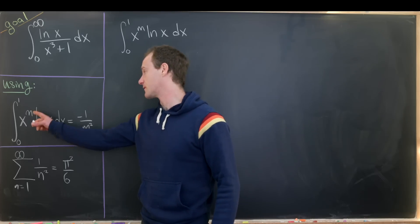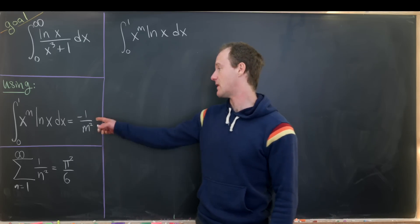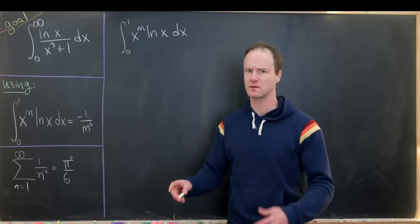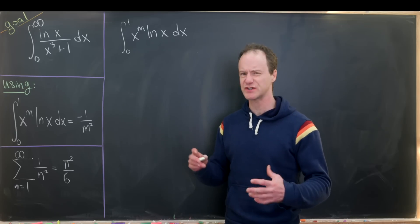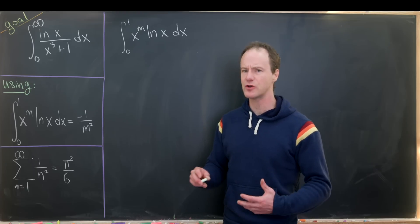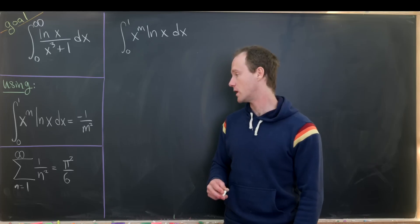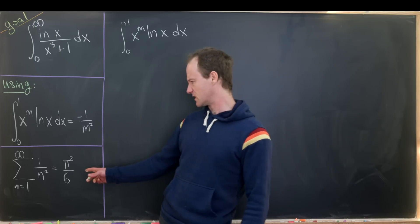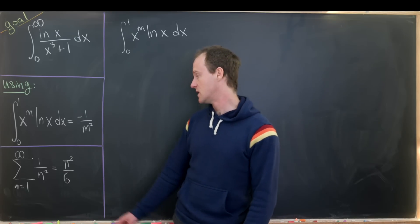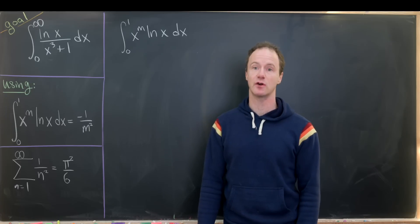The first fact is that the integral from 0 to 1 of x to the m times the natural log of x is minus 1 over m plus 1 squared. That holds for lots of values of m, but we're focusing on natural numbers — really all you need is the real part of m to be bigger than negative 1. And then we'll also use the famous sum of reciprocals of squares formula: the sum of 1 over n squared equals pi squared over 6.